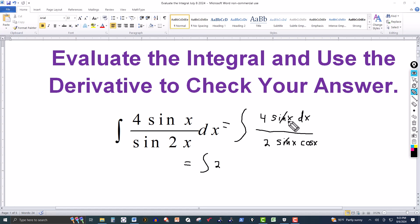2 will go into 4 two times. So I'm left with cosine in the denominator. This would be 2 over cosine of x. And because cosine and secant are reciprocals, I can bring this to the top to the numerator and make it secant of x dx.